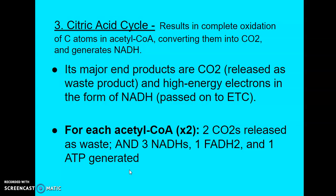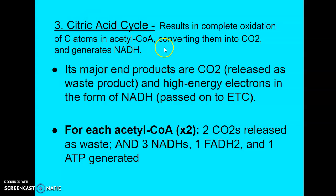A little bit about the citric acid cycle: it accounts for about two-thirds of the total oxidation of carbon compounds in most cells. Its major end products are carbon dioxide, which will be released as waste, and high-energy electrons in the form of NADH. The cycle results in the complete oxidation of carbon atoms in acetyl-CoA, converting them into CO2 released as waste, and in the process generates NADH. Those high-energy electrons in the form of NADH will be passed on to the electron transport chain.